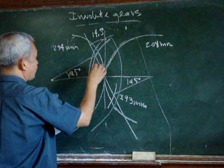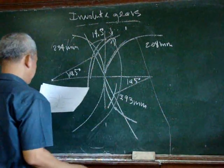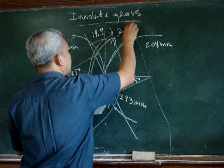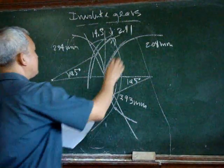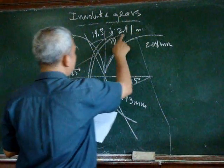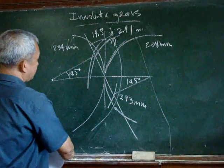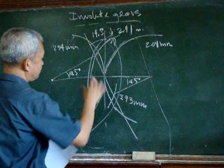according to our graphical analysis, 2.11 mm. That is the amount that we have to cut from our addendum of this pinion gear.